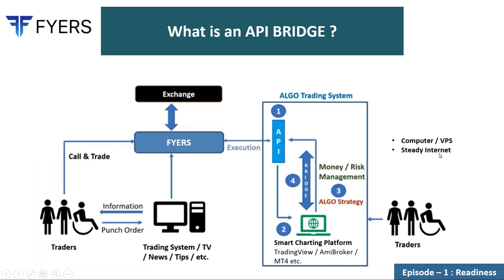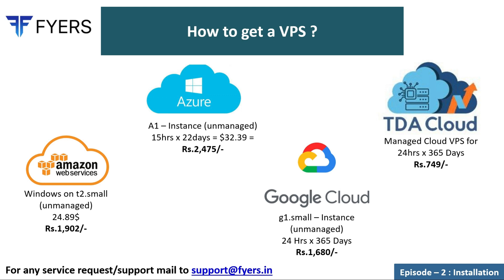When you are using TradingView and this application is running, TradingView is online and any strategy set up is running on a real-time basis. The signal gets generated in real time, and from there it should come into your Fires API bridge. For that purpose your system has to be on, with uninterrupted internet connection and power supply, so that the trade triggered in the smart charting platform can reach you.